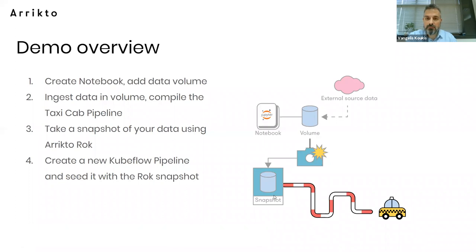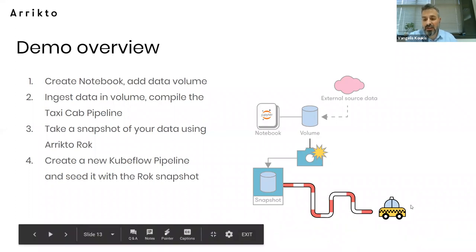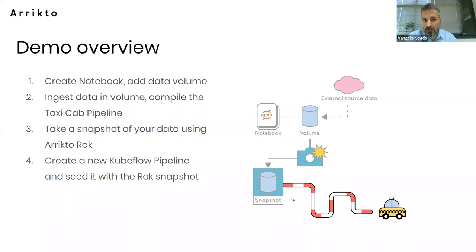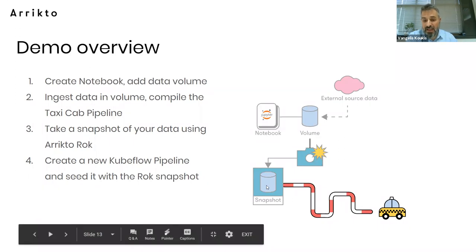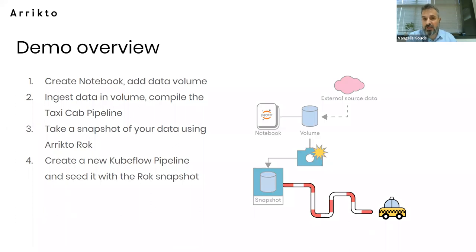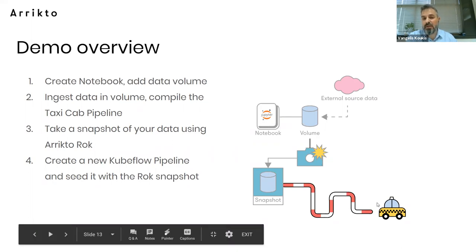After a while — after a few months, for example — when you have a trained model and want to go back to the data that produced it because there's some bias, you can recreate the actual data used to train the model, attach it as a clone to a notebook, and explore. You can actually do it for each individual step of the pipeline. So, let's get started.